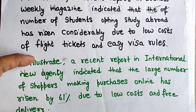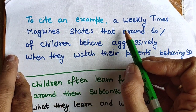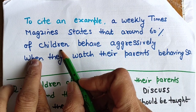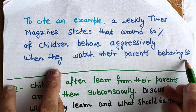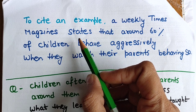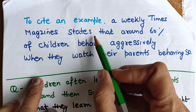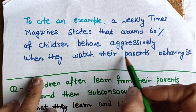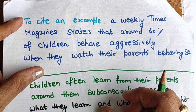The third type of example uses 'to cite an example': 'To cite an example, a weekly Times magazine states that around 60 percent of children behave aggressively when they watch their parents' behavior.' When there is an essay about children misbehaving, you can always use this type of survey-style example.